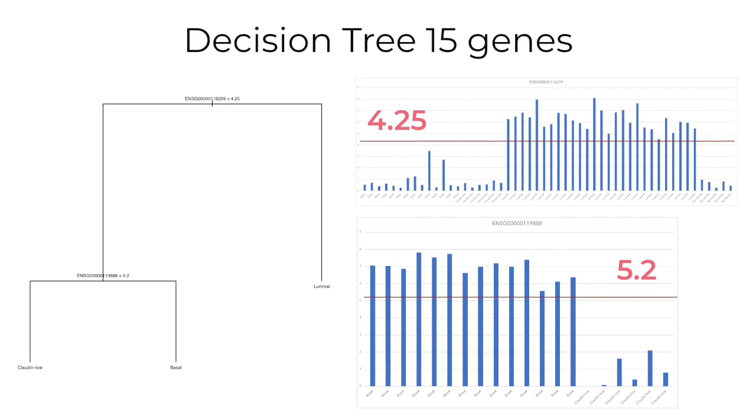If we use less genes in the training dataset, we will get different results, because the dataset can be dealt with differently. Also, binary decision trees are initiated with random start, so the genes selected in this procedure can change from time to time. Here we see the cell line data separated into three groups, luminal, basal, and cloud and low with two genes.